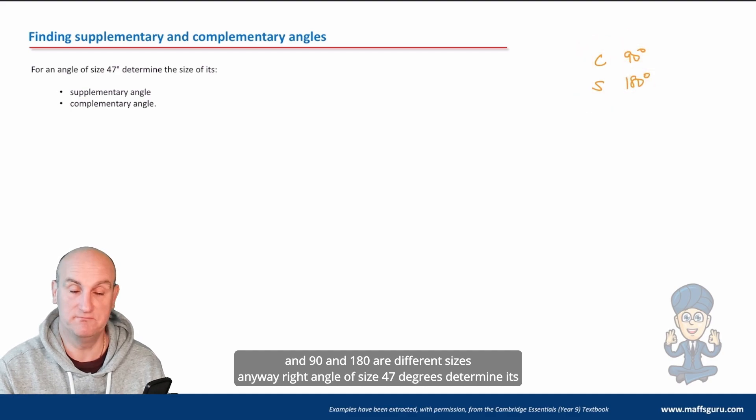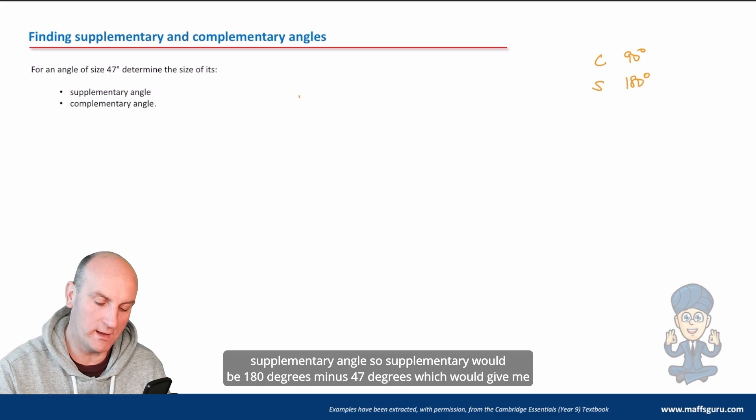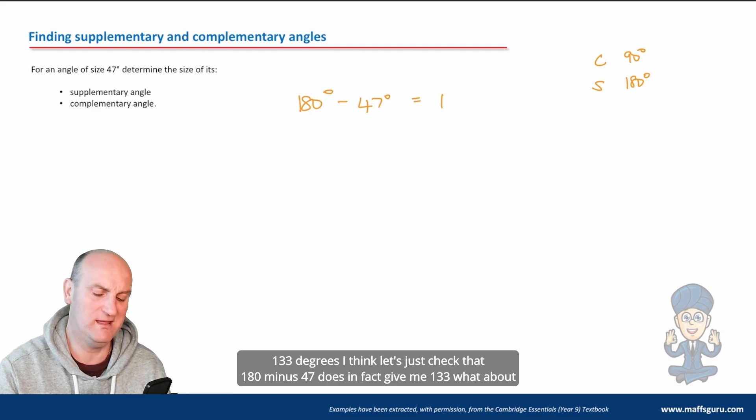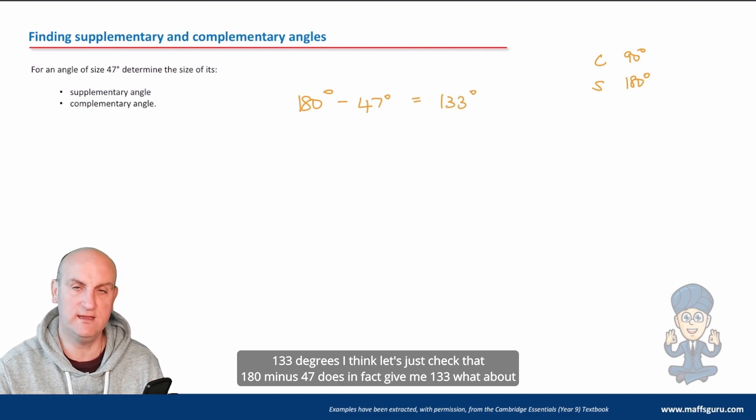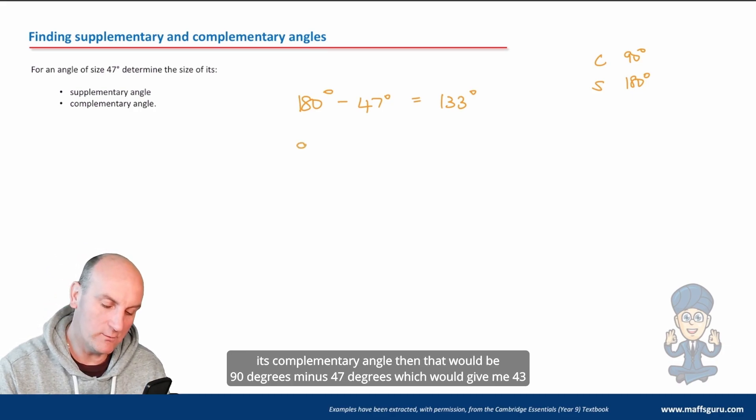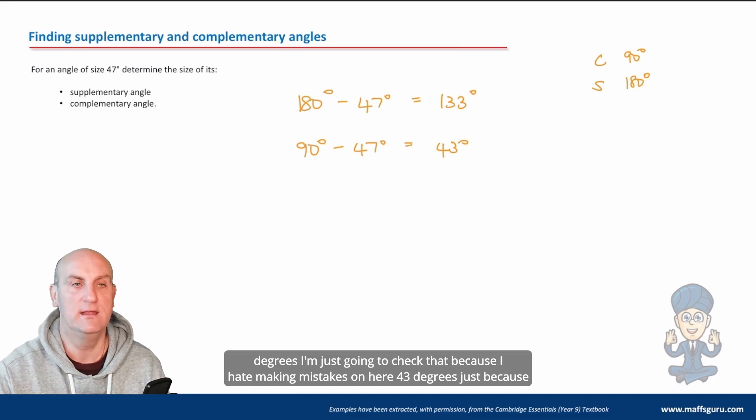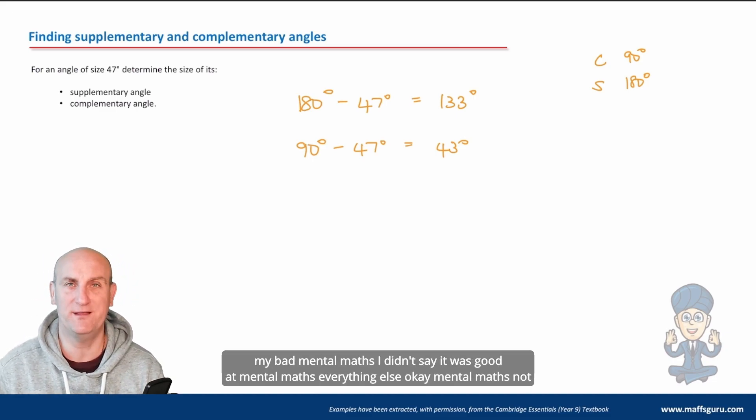Angle of size 47 degrees, determine its supplementary angle. So supplementary would be 180 degrees minus 47 degrees, which would give me 133 degrees. Let's just check that: 180 minus 47 does in fact give me 133. What about its complementary angle then? That would be 90 degrees minus 47 degrees, which would give me 43 degrees. Just going to check that because I hate making mistakes on here: 43 degrees, just because of my bad mental maths.